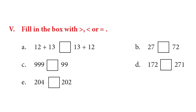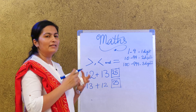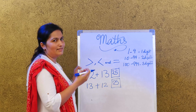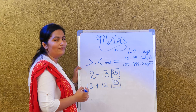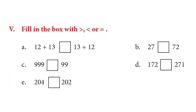Fill in the box with greater than, lesser than, or equal to. Let's look at 12 plus 13 versus 25. Is 25 greater than, lesser than, or equal to 13 plus 12? The answer is the same: 25. When you add both ways the answer is the same, so 25 equals 25. You can fill in the rest of the boxes.